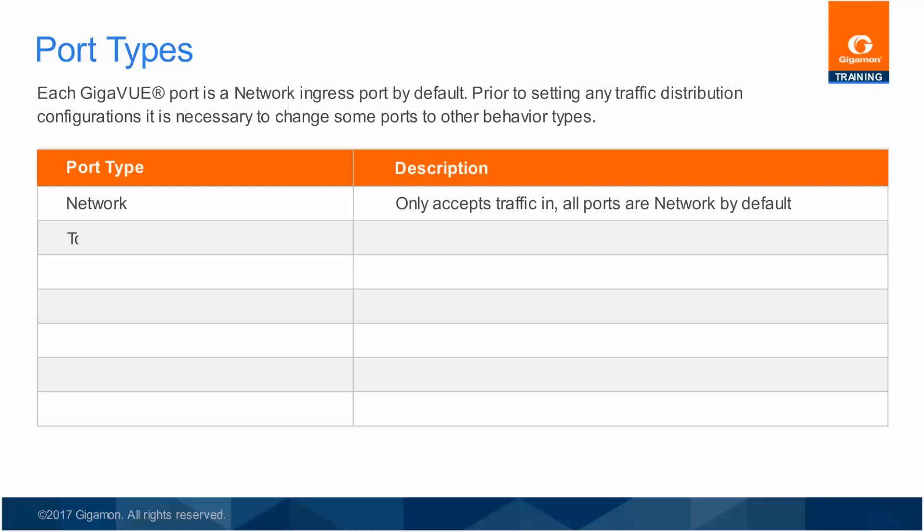The second port type is Tool. A port which only sends traffic out is designated as a tool port. As the name Tool Port indicates, this is where aggregated, filtered, and/or replicated traffic is forwarded out for tools to analyze that traffic. Any traffic received from an external source will be discarded by a tool port.